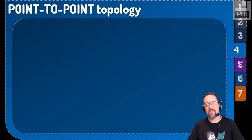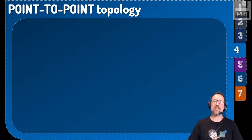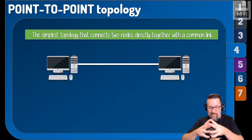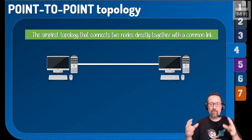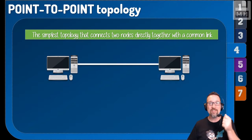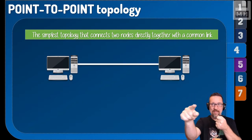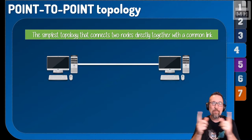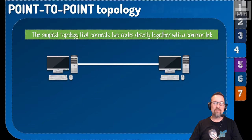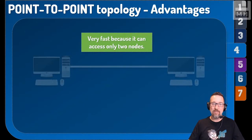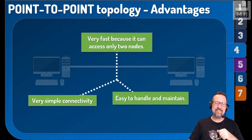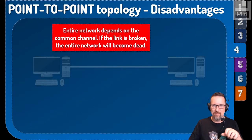Point-to-point topology is the simplest of all — it connects just two nodes to each other with a common link. A good example is your TV remote and your TV: one point to another, a button press sends a signal, signal received, action sent back. Advantages: it's very fast because data only travels between two points, it's the simplest connectivity you can get, and it's very easy to handle and maintain.